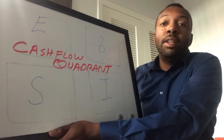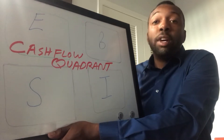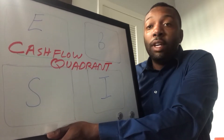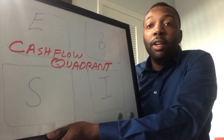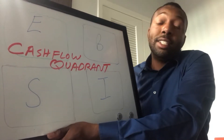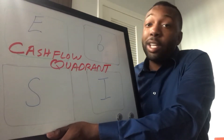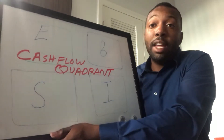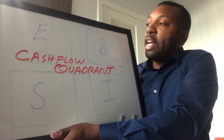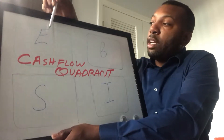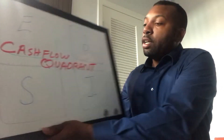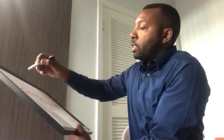— someone who did half the work you did but still got the same paycheck at the end of the day. That's the employee quadrant: income tied to a position regardless of individual effort.